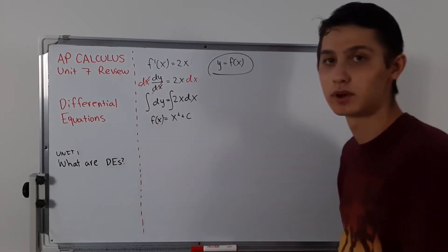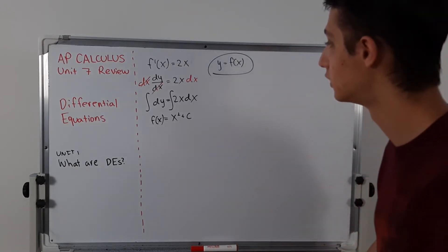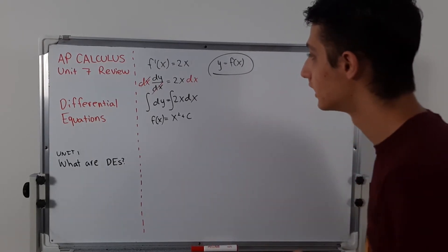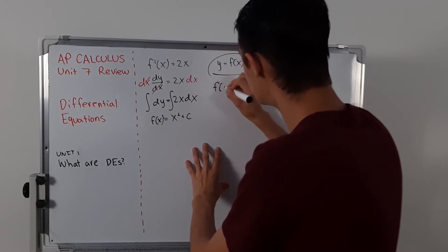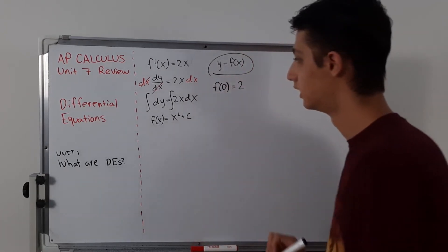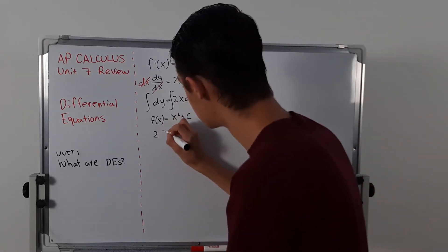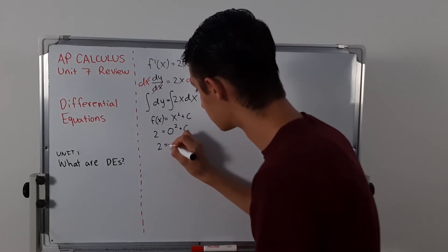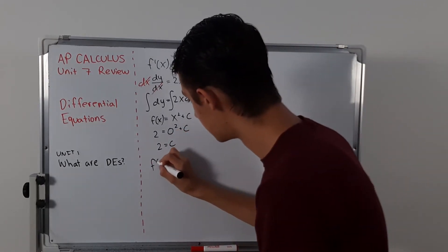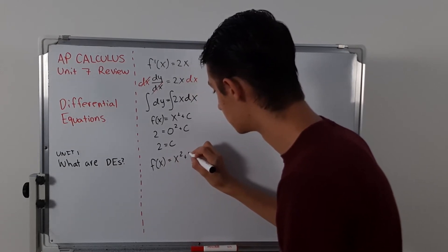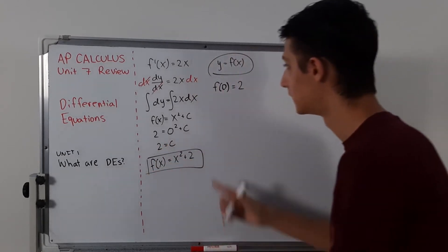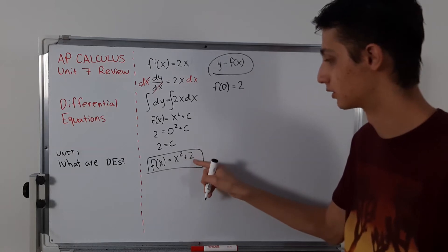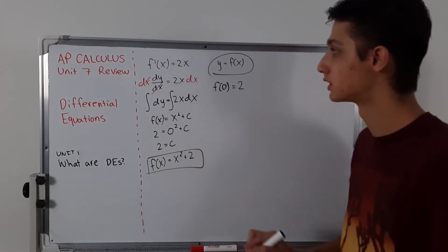Now let's find what c is. Let's say they gave us that f of 0 equals 2. That means 2 equals 0 squared plus c, so c equals 2. Then your final function is f of x equals x squared plus 2. That's only if they gave you that initial condition — a different condition would give a different constant.